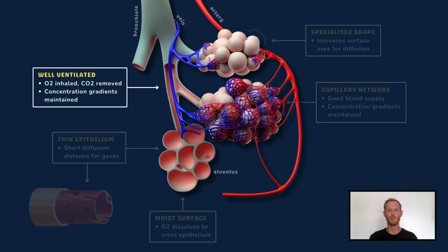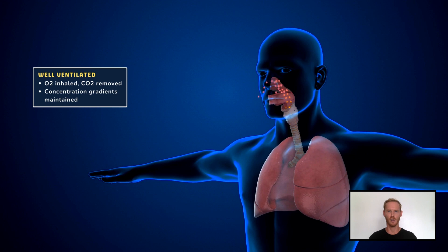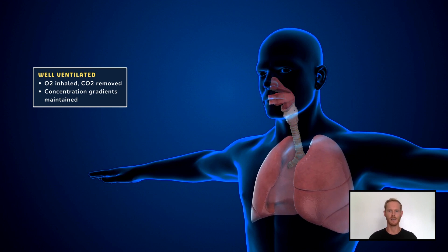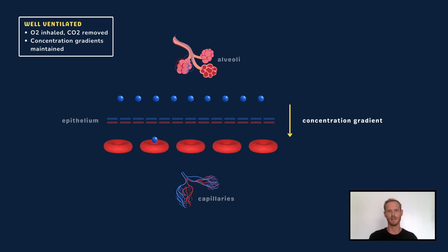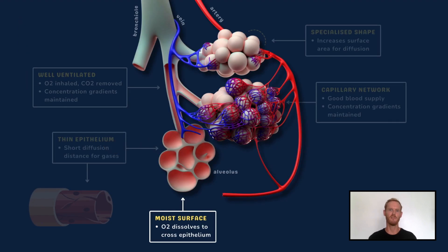The alveoli are also very well ventilated. Pulmonary ventilation, or breathing, constantly replaces oxygen and removes carbon dioxide, which helps to maintain steep concentration gradients for both gases. Remember, the greater the difference in concentration either side of the exchange surface, the faster the rate of diffusion. Finally, the alveoli are lined with a thin film of moisture, which allows oxygen to dissolve and pass freely across the epithelium.